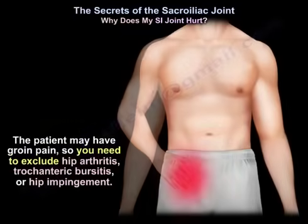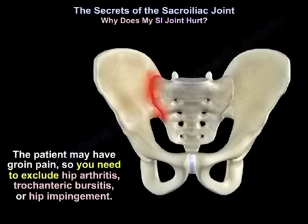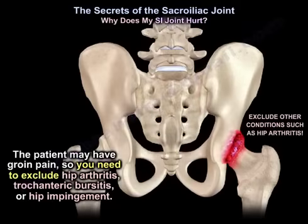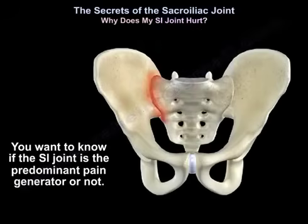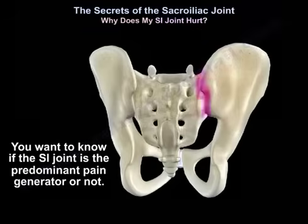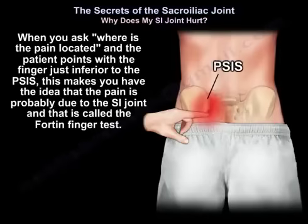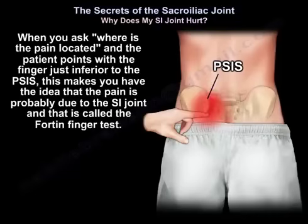The patient may also have groin pain, so you need to exclude hip arthritis, trochanteric bursitis, and hip impingement. You want to know if the sacroiliac joint is the predominant pain generator. When the patient points with a finger just inferior to the posterior superior iliac spine, this suggests the pain is probably due to the sacroiliac joint — and that is called the Fortin finger test.